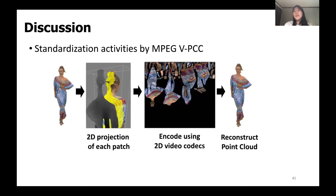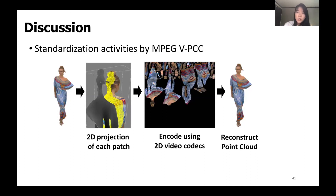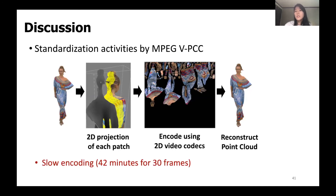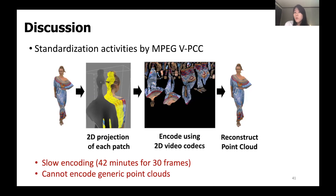Before we end, we touch on some discussion points. First, there is an ongoing standardization activity by MPEG-VPCC for point cloud compression. The core idea is to separate 3D content into small patches based on normal values, project them individually on a 2D frame, and use conventional 2D video codecs, achieving high compression rates. However, we have not adopted this approach since the process of calculating normals and generating patches is complicated, resulting in a slow encoding rate of up to 42 minutes for 30 frames, and it cannot encode generic point clouds with multiple people or objects without smooth texture. Nevertheless, leveraging conventional 2D video codecs remains a promising research direction.